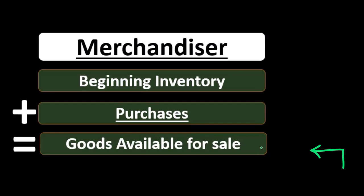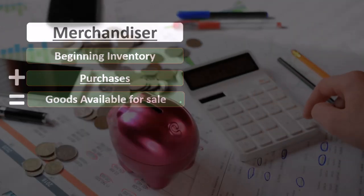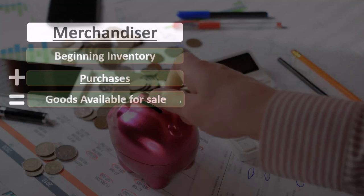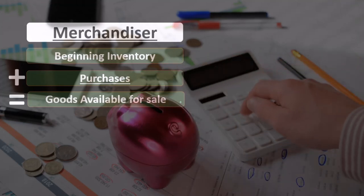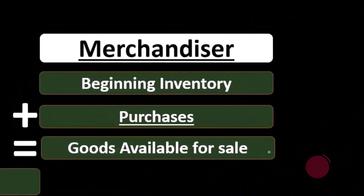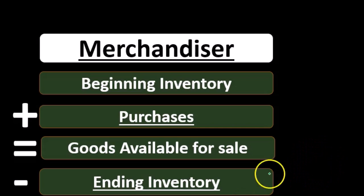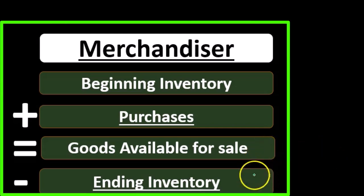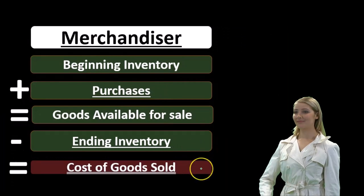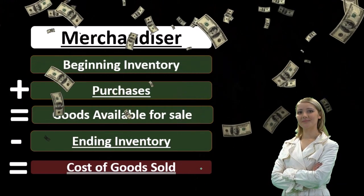That's what we could have sold during the time period — if it's a month, we could have sold this many units. To find what we actually sold, we subtract out ending inventory, which we can imagine we obtained through a physical count. We count inventory at the end, as in a periodic inventory system. If this is the inventory available for sale and this is the inventory not yet sold, the difference is what we have sold on a cost basis — that's the cost of goods sold, which is reported on the income statement as an expense.